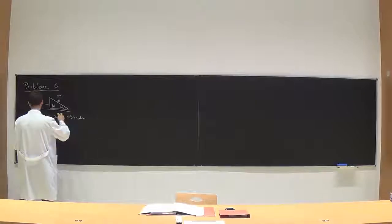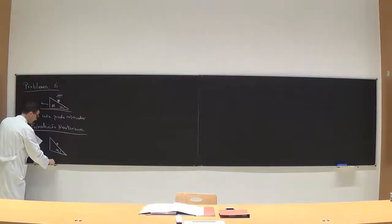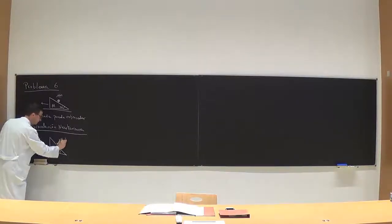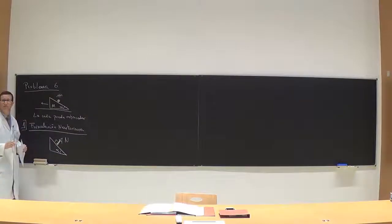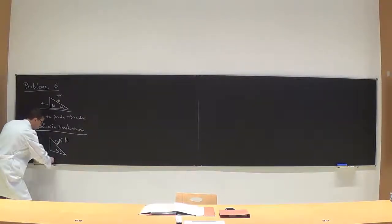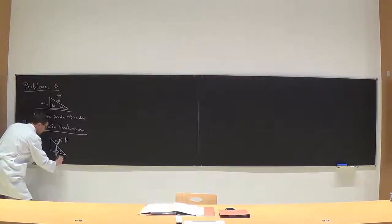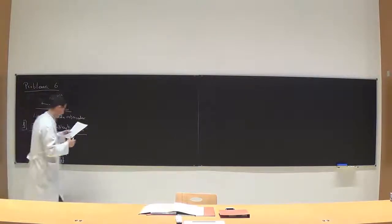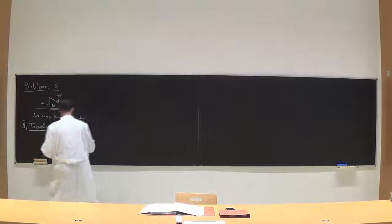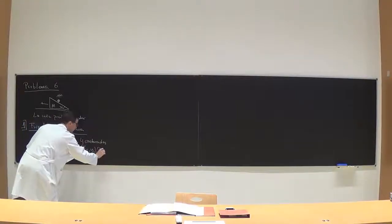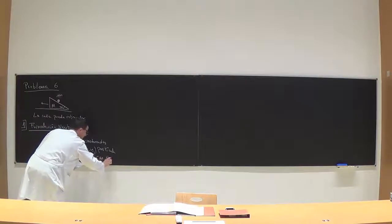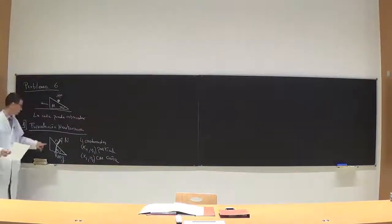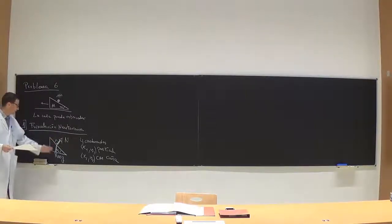Vamos a empezar por la formulación newtoniana. En un momento dado, la partícula está apoyada aquí y hay una fuerza que es la normal, perpendicular al plano de la cuña. Y después tenemos una fuerza vertical, masa por gravedad. Entonces hay cuatro coordenadas: x₁ e y₁ para la partícula y x₂ e y₂ para el centro de masas de la cuña. Es un problema plano donde hay dos objetos, cuatro coordenadas. Tenemos dos fuerzas: la normal y la gravedad.